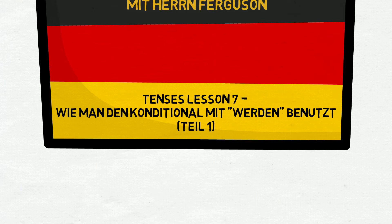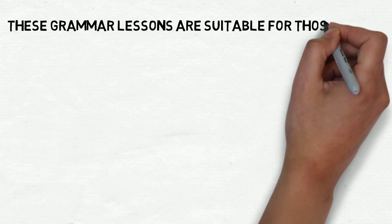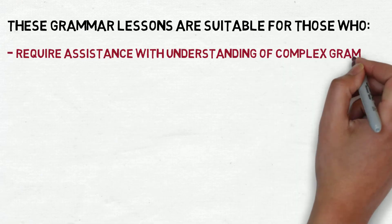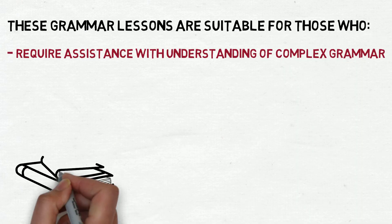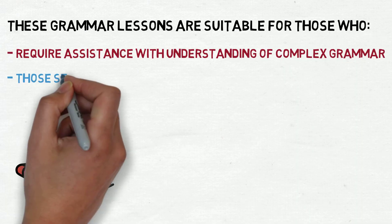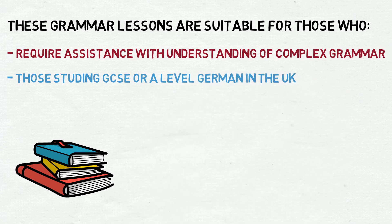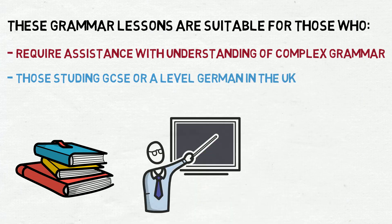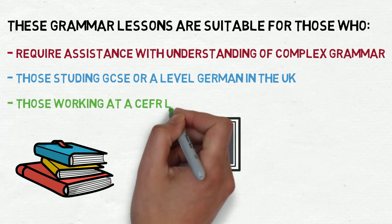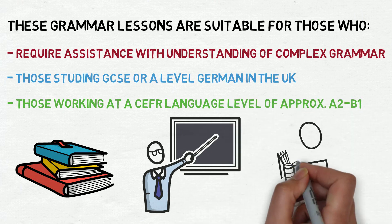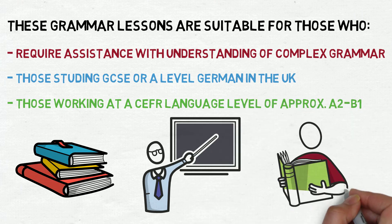Teil eins. Part one. This lesson is designed to assist with the understanding of the more complex aspects of German grammar and is suitable for students studying for GCSE or A-level in the UK, or students of an equivalent level. In terms of CEFR language learning levels, this is approximately A2 to B1 level.